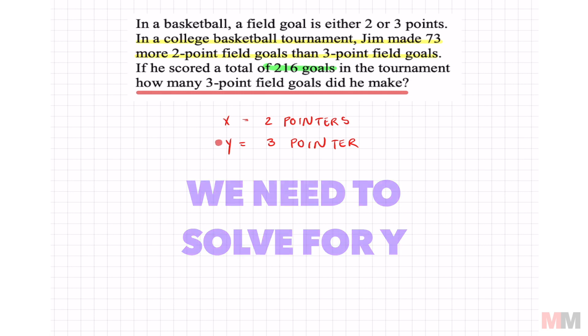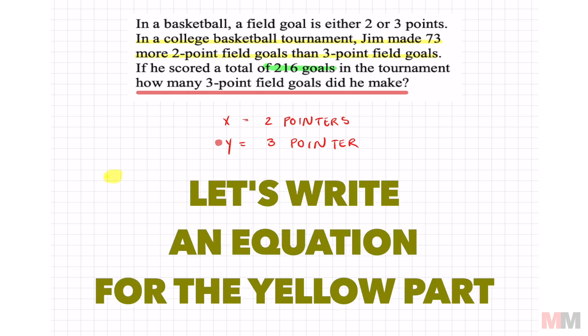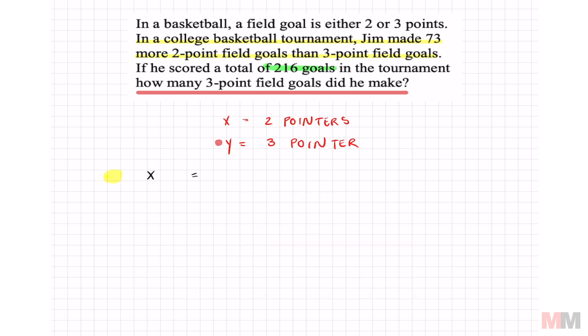Let's start with the yellow. And this is the confusing one. This is why people often miss this. So let's say x and y are our numbers. We know from that sentence that he made more two-pointers. I know my x number has to be more than my y. And how much more? 73 more. The reason why people miss this is that people are going to put plus 73 right here because that's the order of how you read the sentence. But actually, it needs to go with the y.